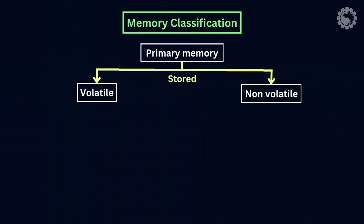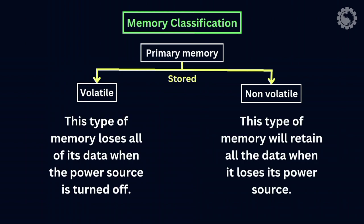For primary memory, it is based on how data is stored—whether data storage is volatile or non-volatile. Volatile type of memory loses all its data when the power source is turned off. Non-volatile type of memory retains all data when it loses its power source.